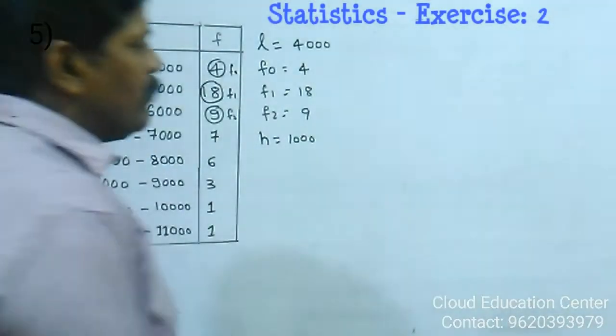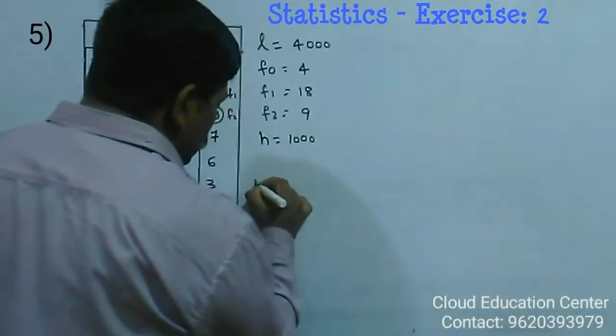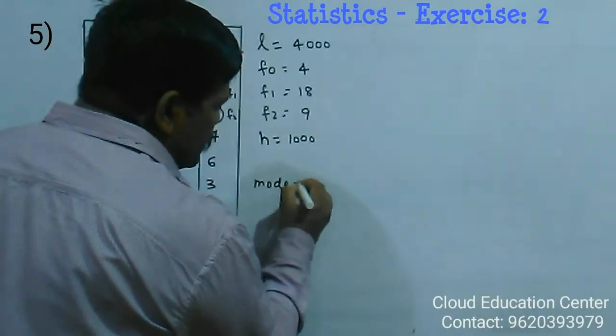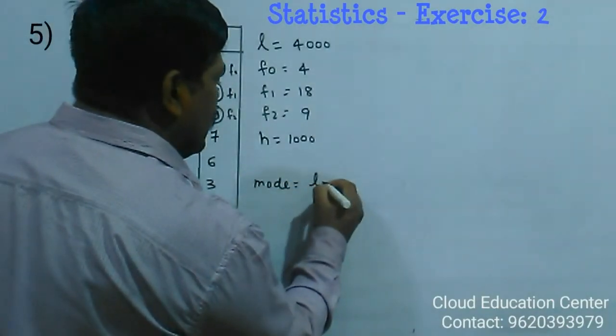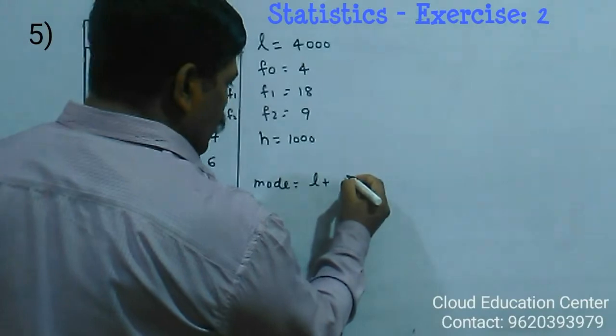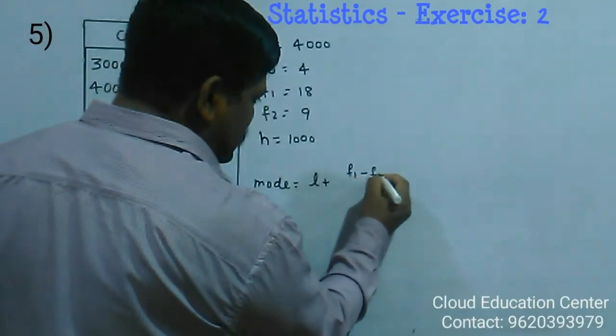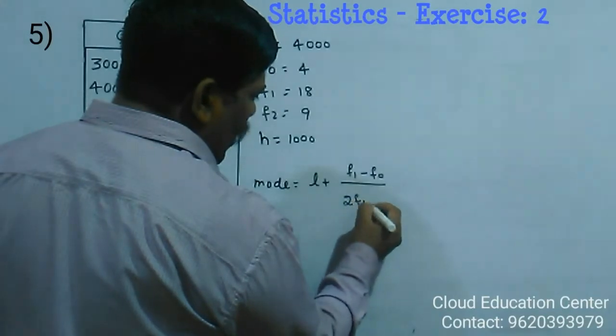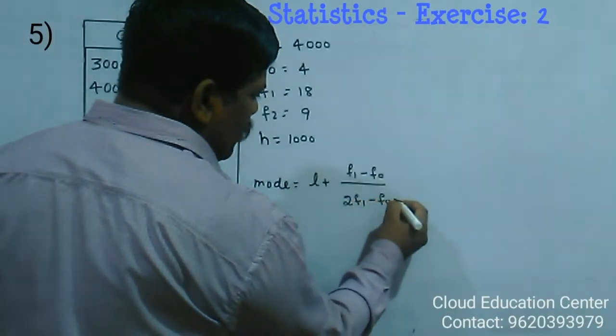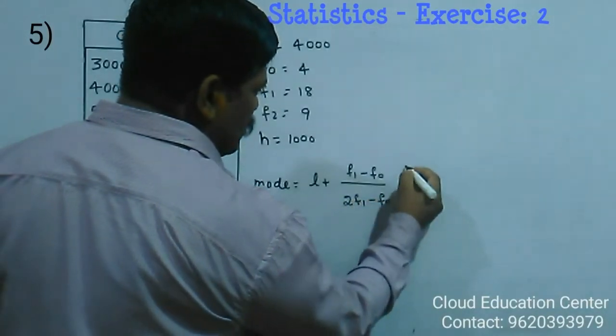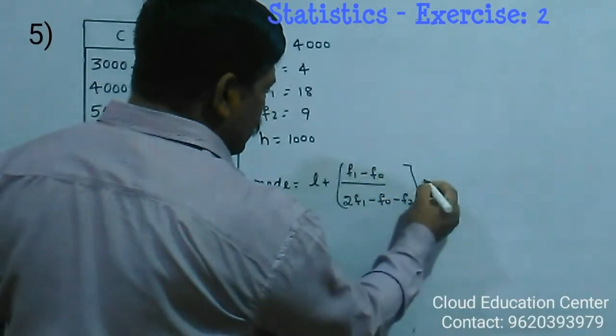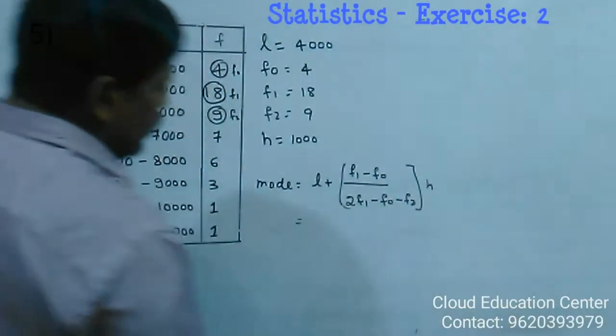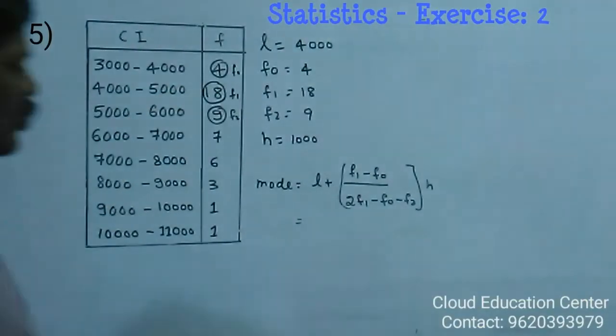Now just apply the formula to find the mode. We know that mode is equal to L plus f1 minus f0 by 2f1 minus f0 minus f2 into h. Here, L is nothing but 4000.